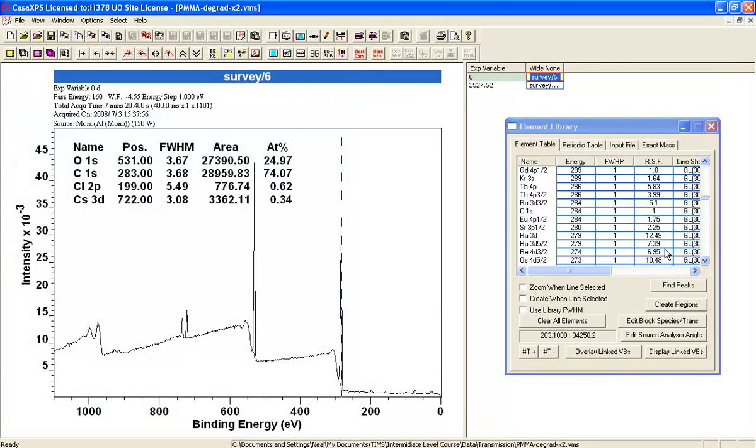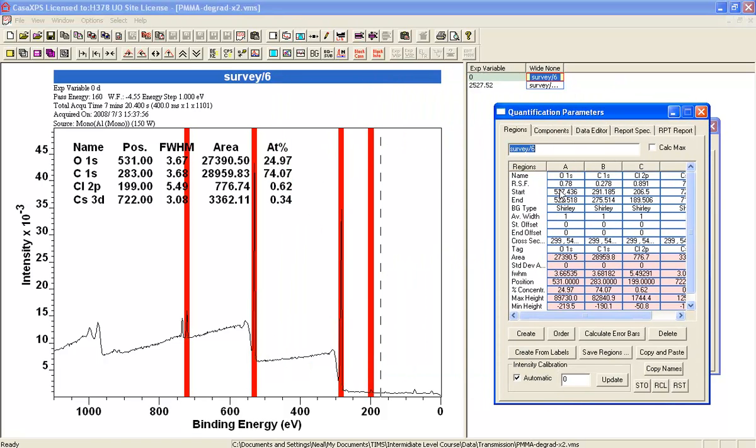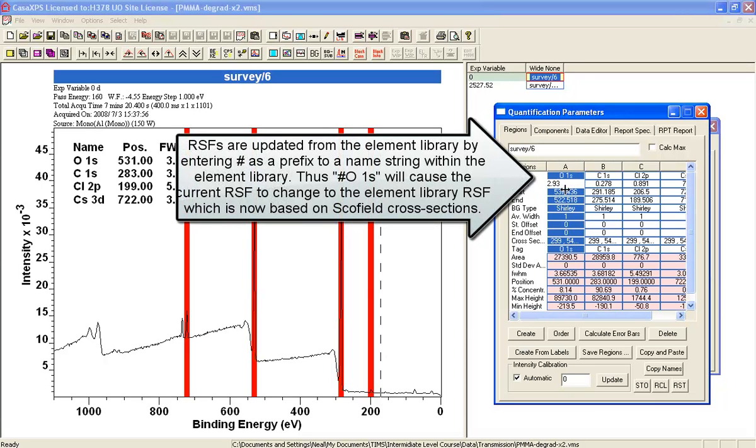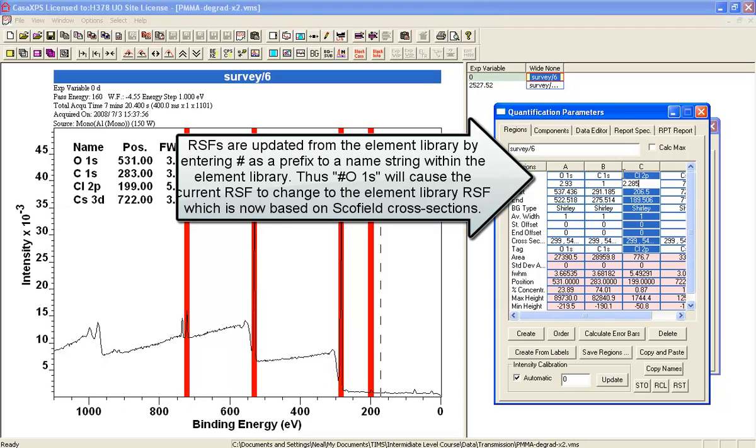If we update these RSFs, taking them from the original Kratos ones, if we update by putting a hash in front of each of these names that are also in the element library, then you'll see that the RSFs are all updated.